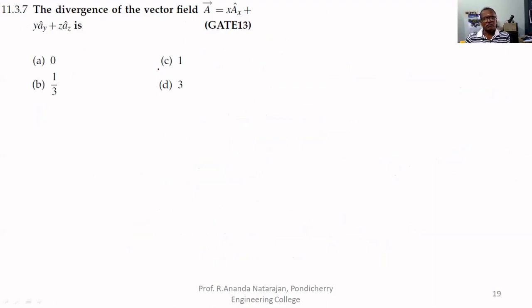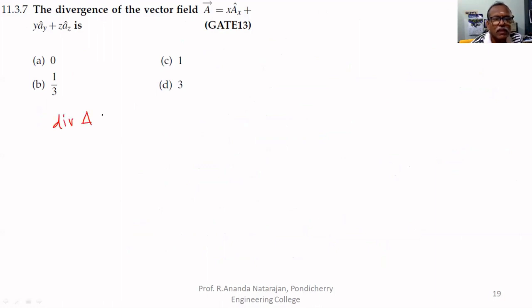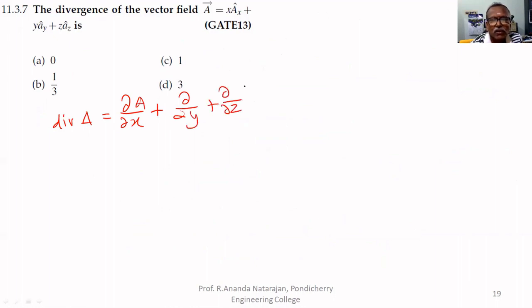Divergent of vector. Divergent of vector A is equal to ∂/∂x plus ∂/∂y plus ∂/∂z of A.